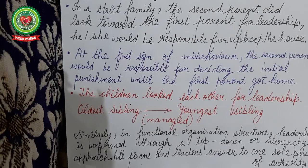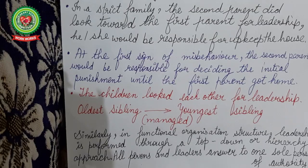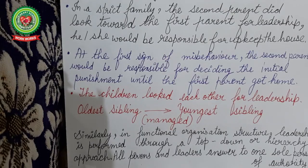All persons and leaders answer to one sole person of authority. In functional organizations, the group is like a strict family in which one person is the sole authority — be it a chairman, president, or director. All managers, deputy managers, and functional heads have to answer to that person. There is a top-down hierarchy: from the CEO, then directors, then managers of different departments, down to workers.